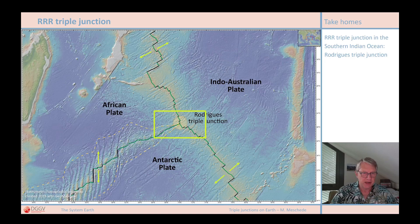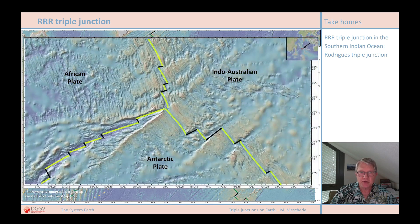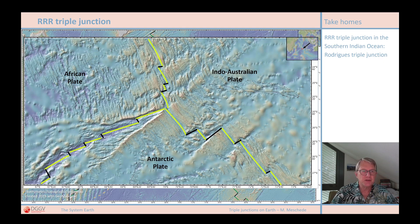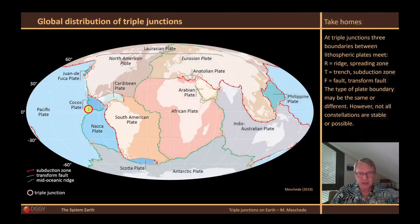Let's have a closer look at this part of the ocean floor. The Rodriguez triple junction is also very clearly visible in detail and is geometrically simple. As you can see in this close-up view, the ridges actually start right at the triple junction. This is, however, not the case for every triple junction, as you will see in the following examples.